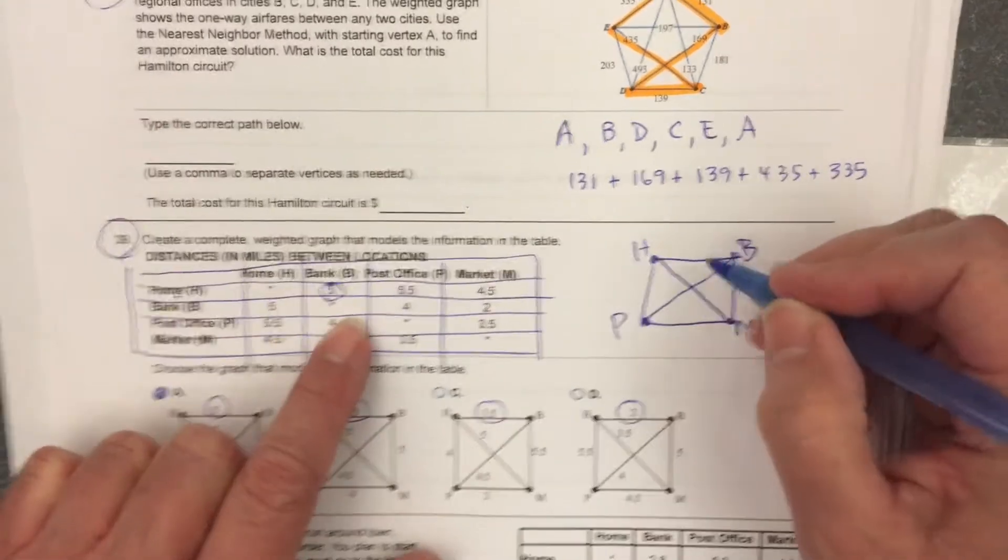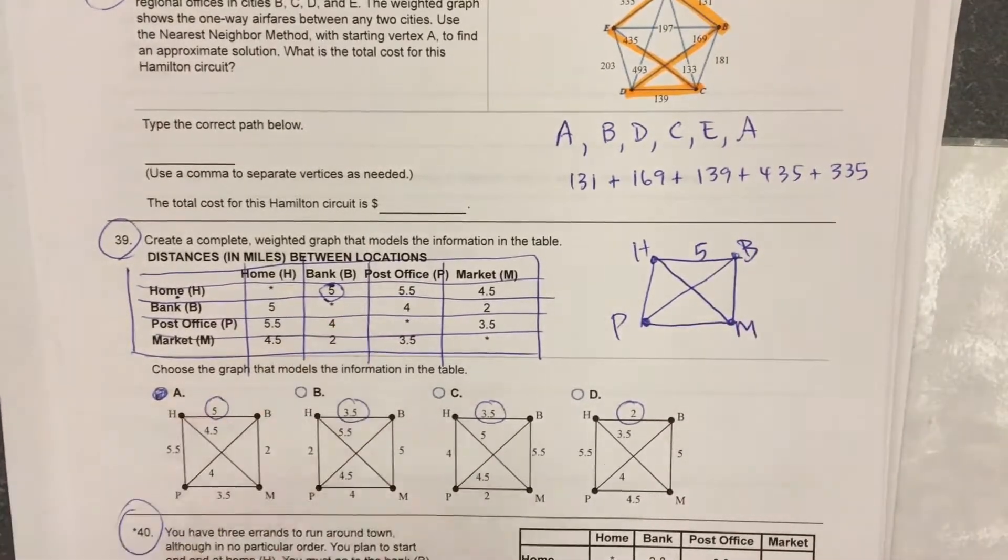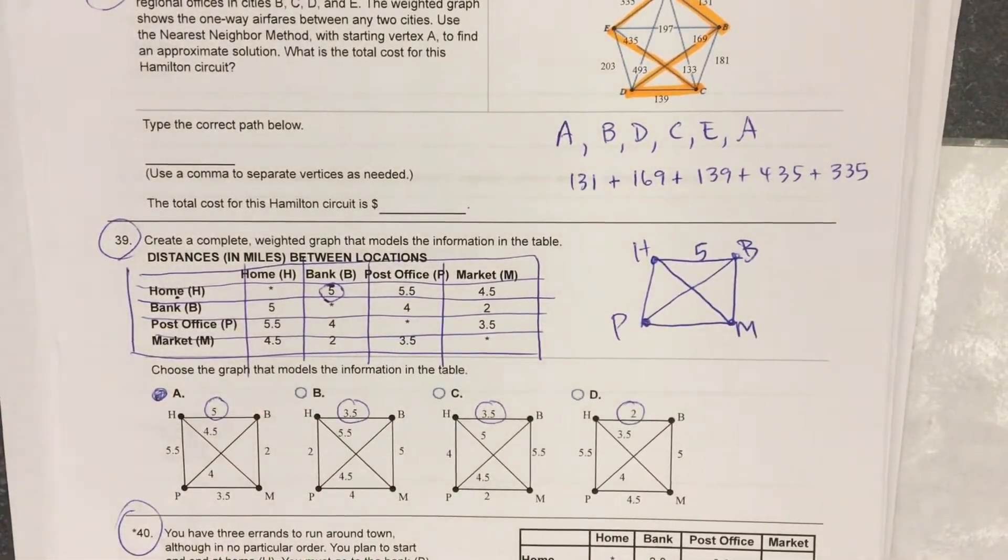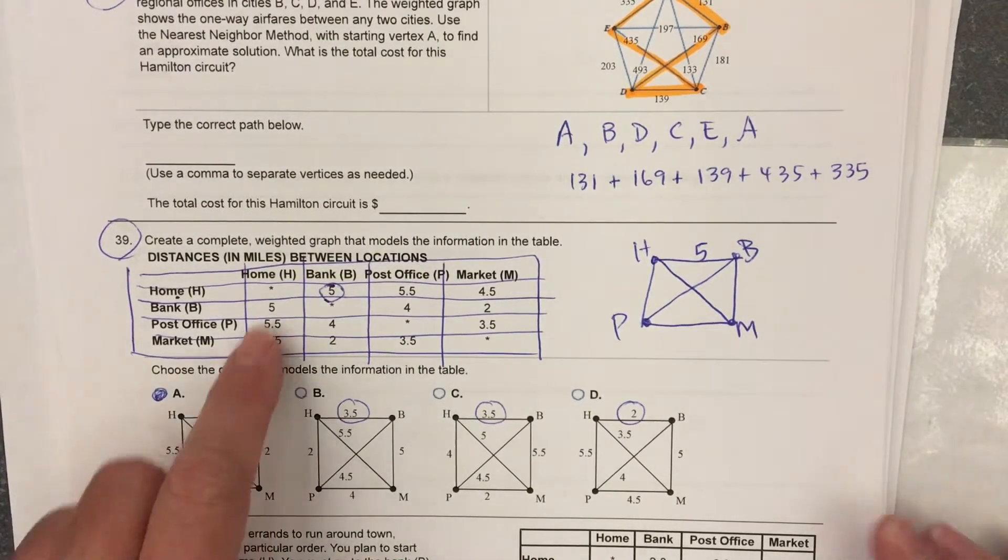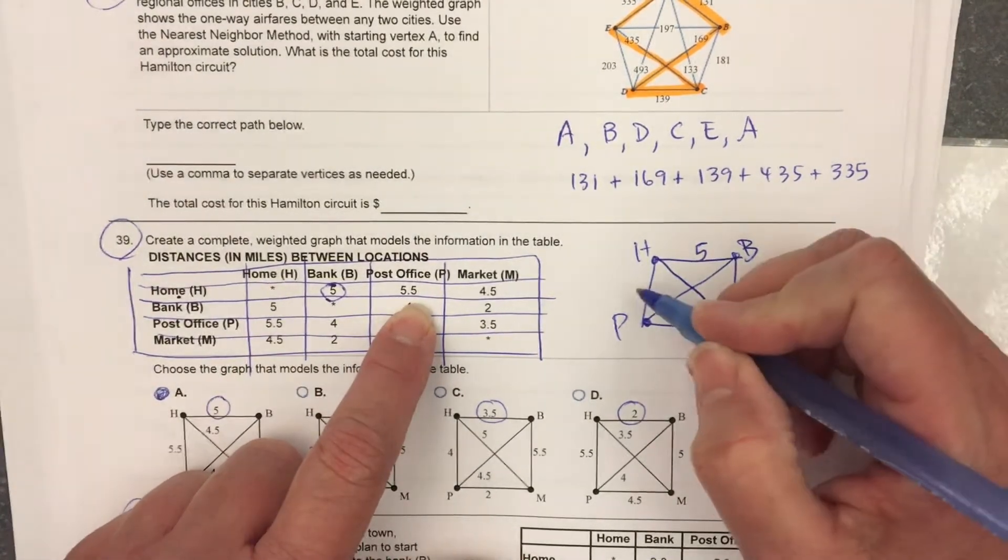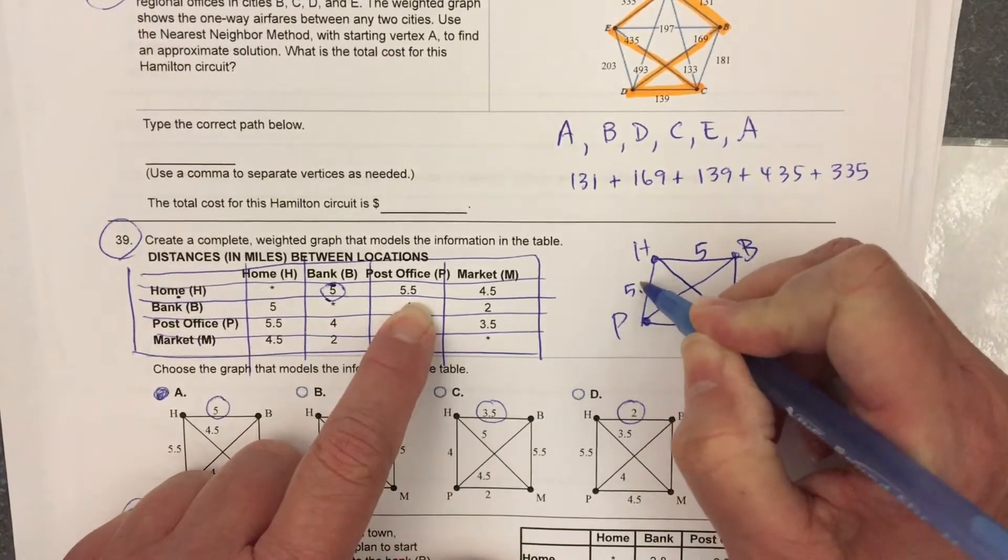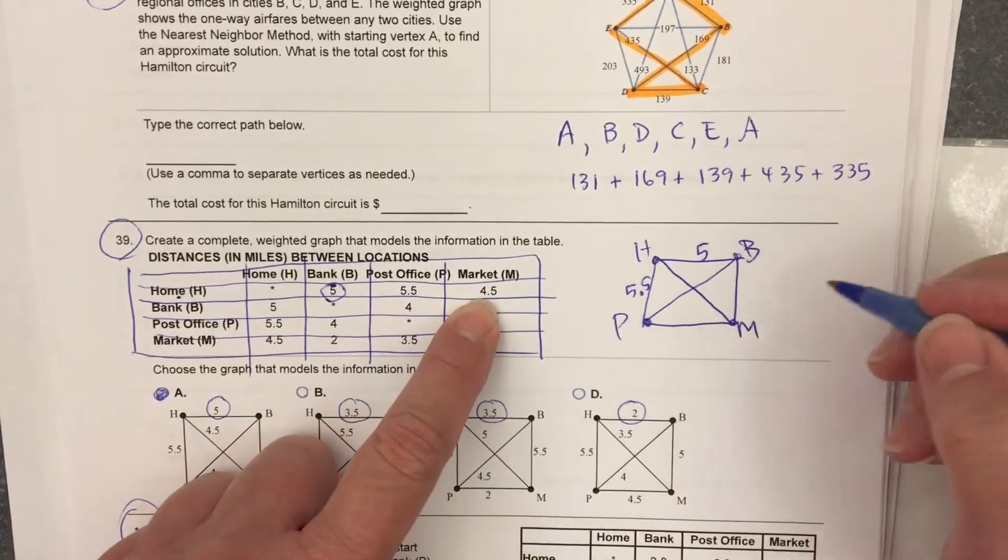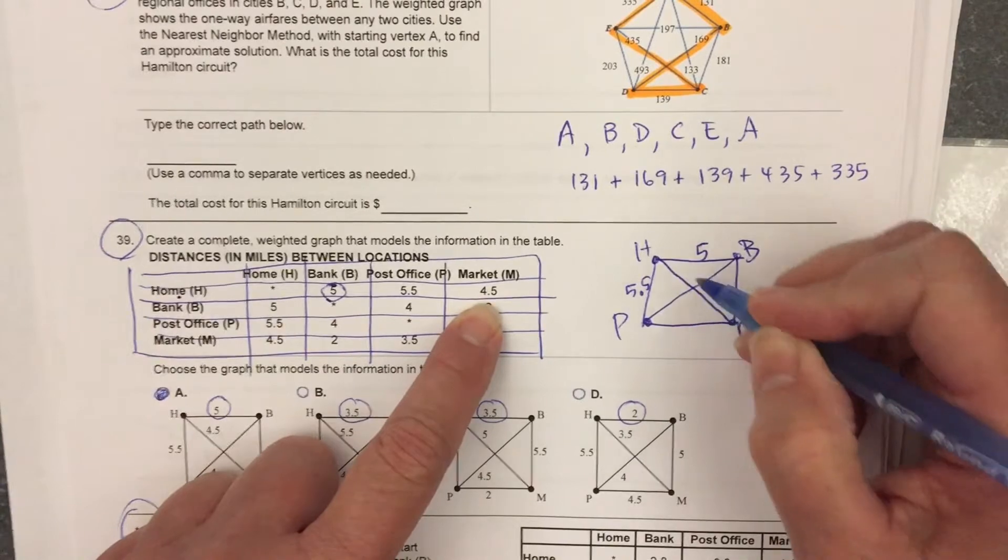Home to the bank is 5. That right there is enough to pick the choice they're showing. Home to the post office is 5.5. Home to the market is 4.5.